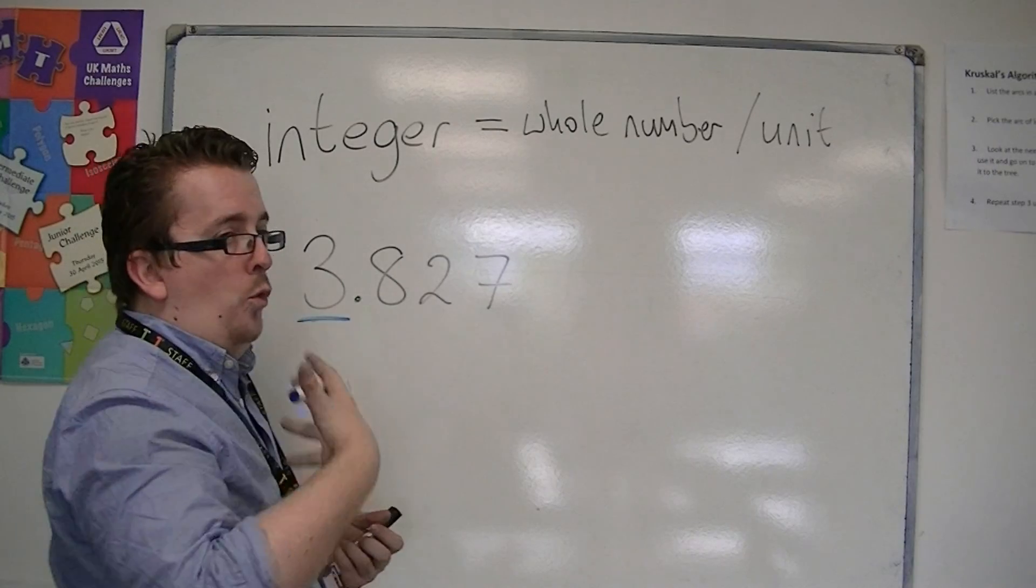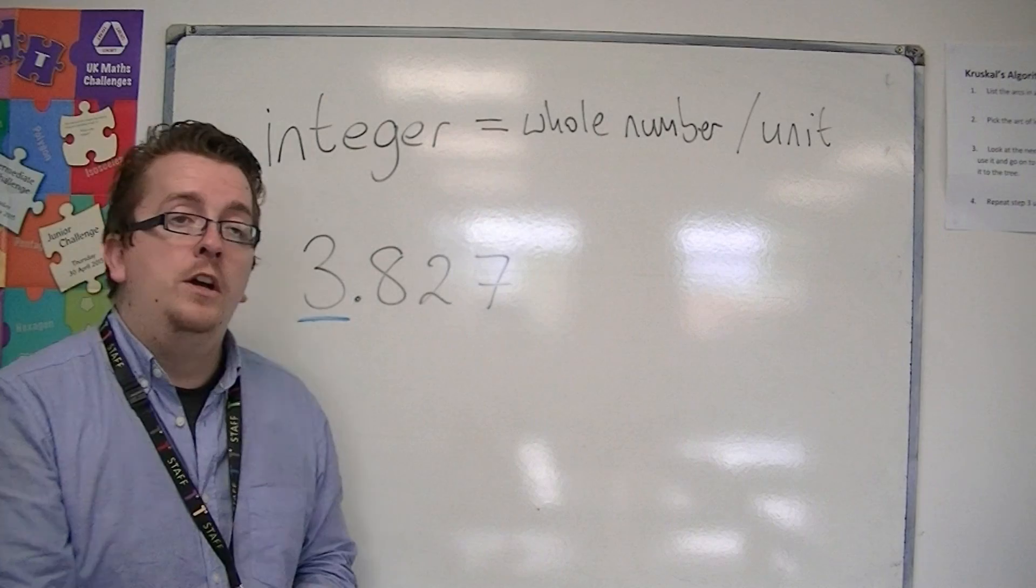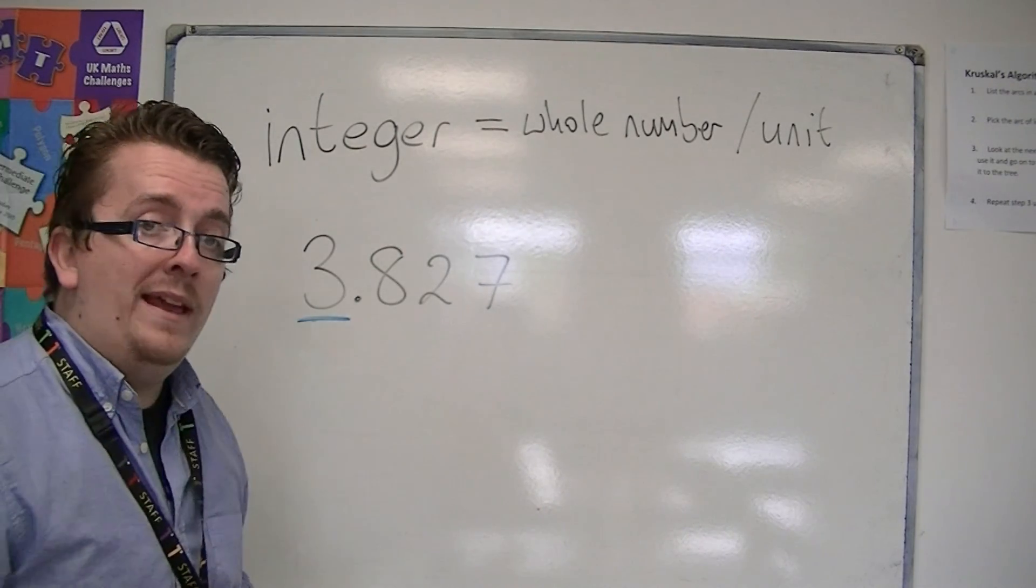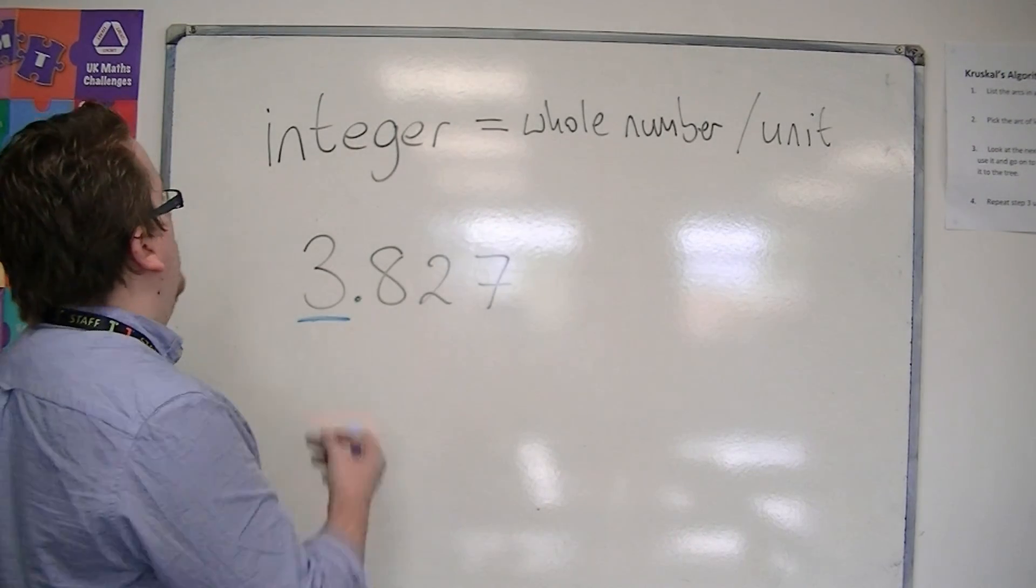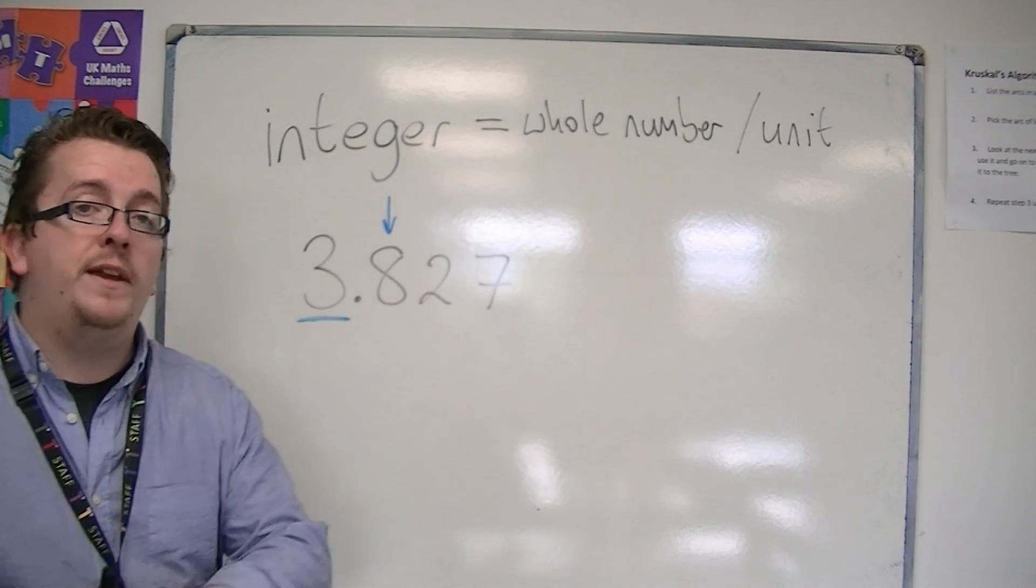In all the same cases we've been looking at before, we identify the place value we're considering. We look at one to the right, and that will determine whether we should round up or round down.